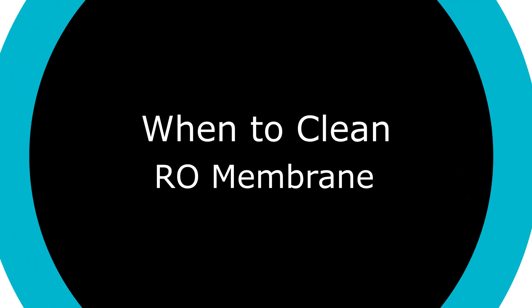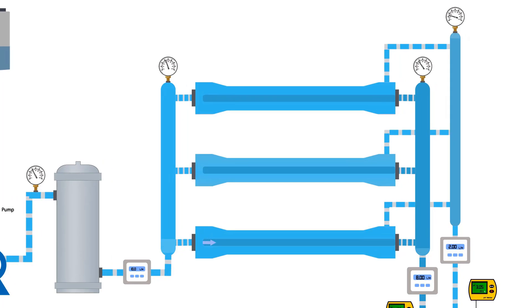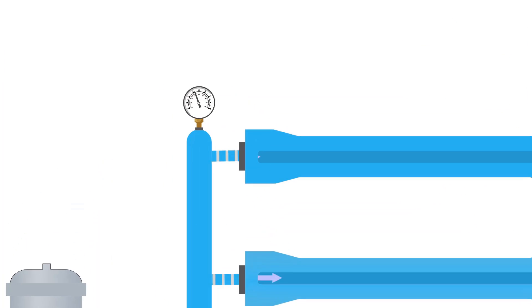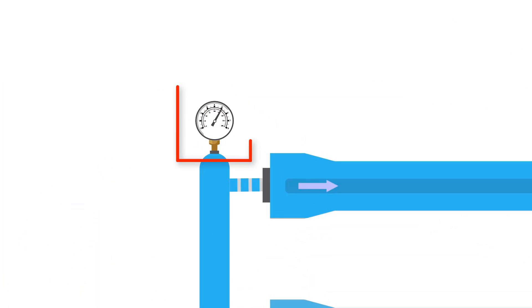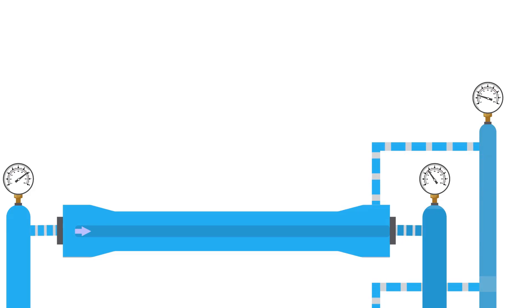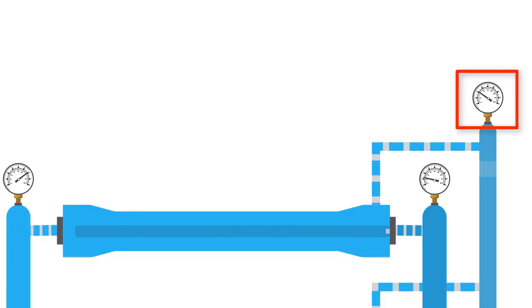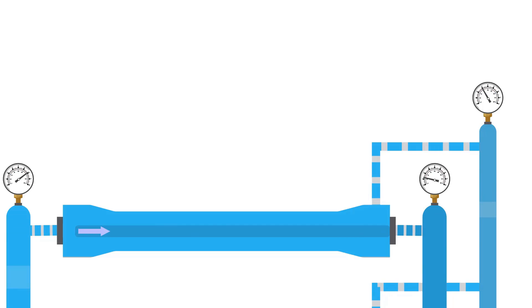When to Clean Reverse Osmosis Membrane. If the pressure of the inlet header increases relative to normal, and the pressure of the permeate decreases while the reject pressure increases relative to normal, it indicates that the membranes need cleaning.